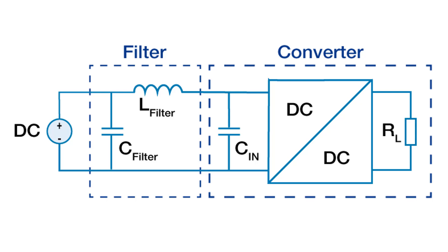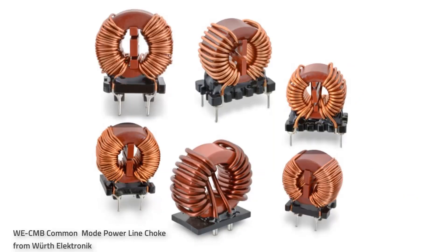With a well-designed input filter and carefully chosen components, you can achieve the highest possible insertion loss while maintaining the stability of the switching controller. EMI filters provide the desired insertion loss or attenuation at a desired frequency by providing high impedance over a wide range of frequencies. Selecting the right EMI filters early in the design process can effectively manage this noise.